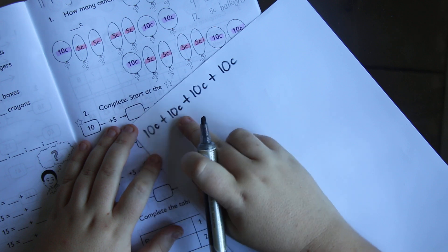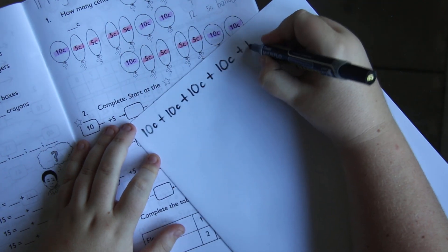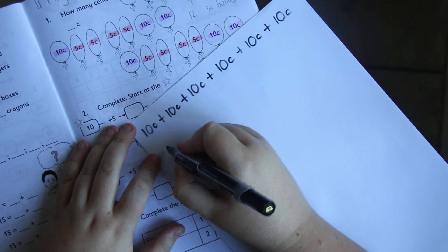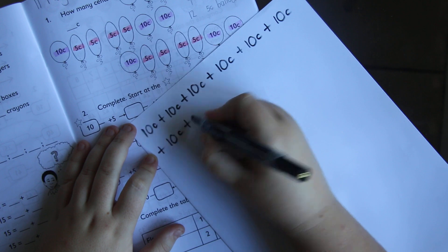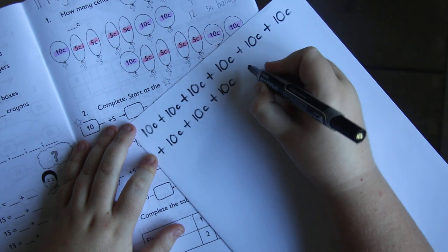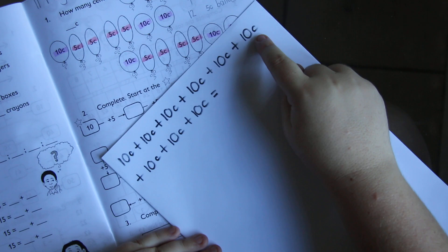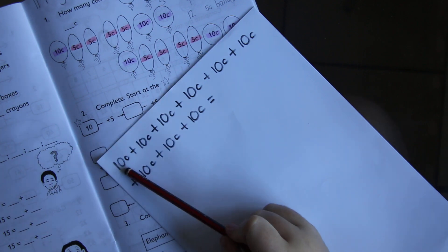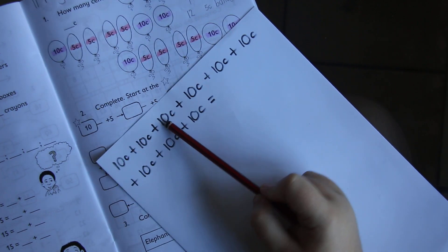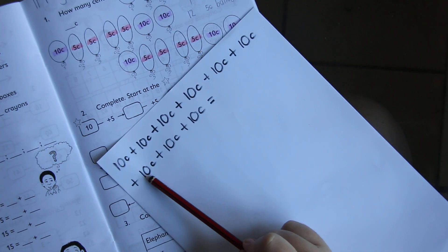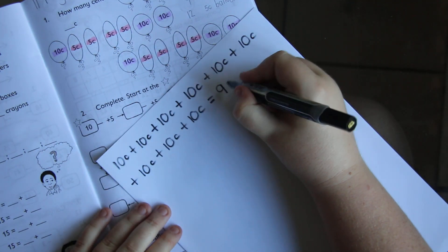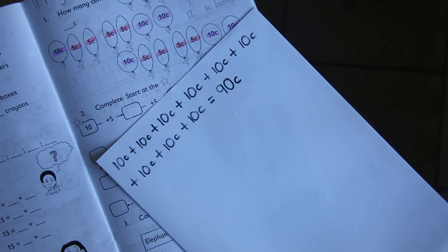So far we have 1, 2, 3, 4, 5, 6, 7, 8 and 9. Let's double check we have all of them — 1, 2, 3, 4, 5, 6, 7, 8, 9. We have all of them. Now let's count in 10s together: 10, 20, 30, 40, 50, 60, 70, 80, 90. So we have 90 cents. All the 10 cent balloons added together gives us a total of 90 cents.